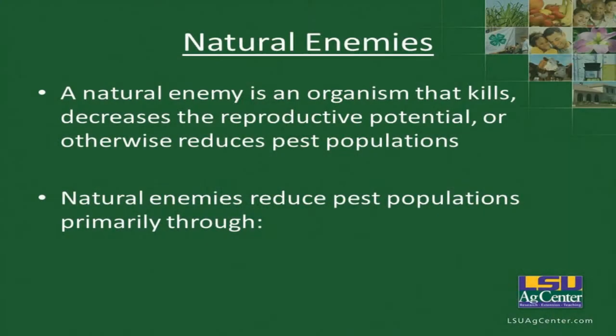Natural enemies for insects include lady beetles and reduviids. Several stink bug species are also natural enemies, such as the spined soldier bug. These are all effective in reducing pest populations. Natural enemies reduce pest populations primarily through predation, parasitism, and herbivory.